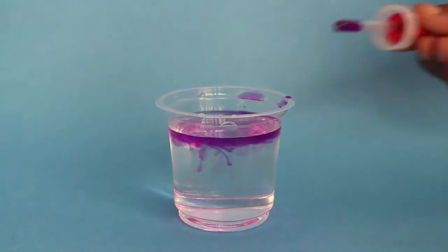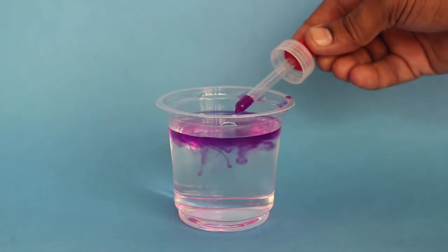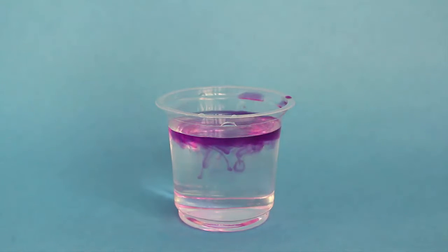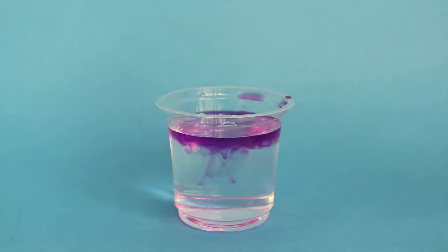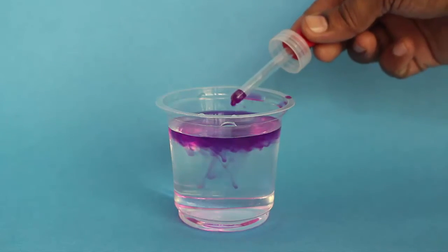This means that the colored hot water is lighter than the cold water. Because the hot colored water is lighter, that is why it floats on the top of the cold water.